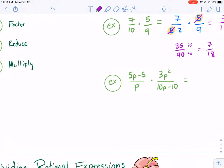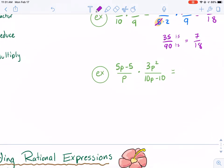Here's a little tougher example. So we're asked to multiply 5p minus 5 over p times 3p squared over 10p minus 10. These two terms, there's really nothing to factor there, but anytime you have addition or subtraction and binomials, there's generally something that you can factor out.